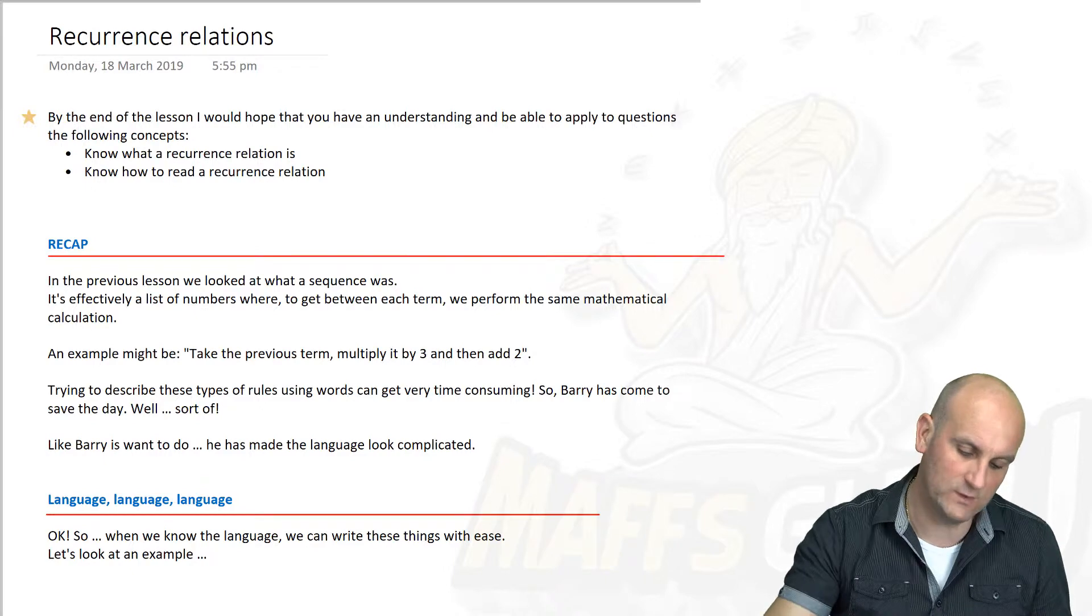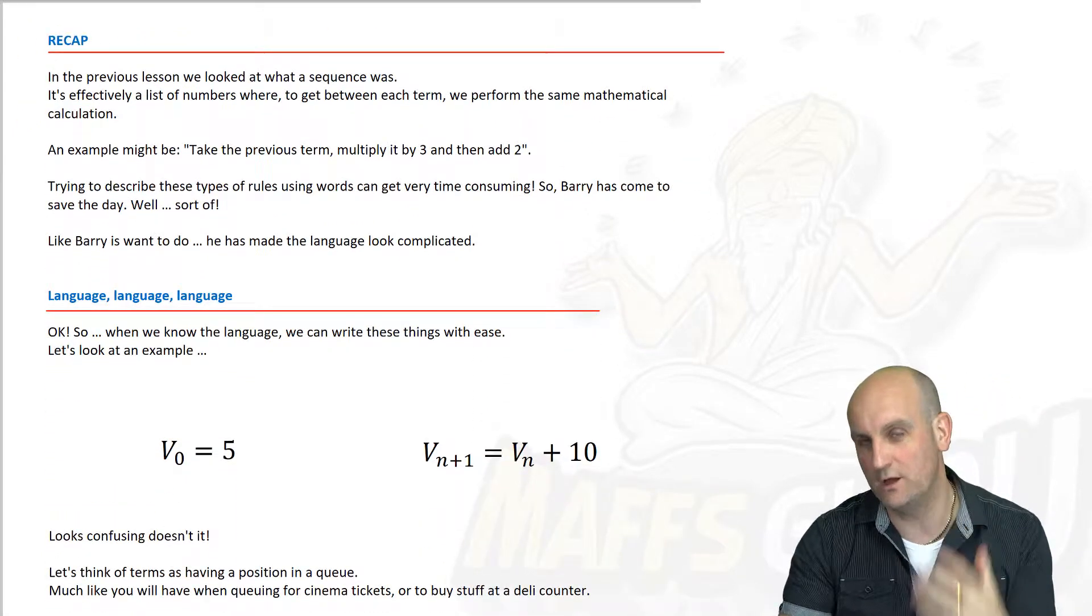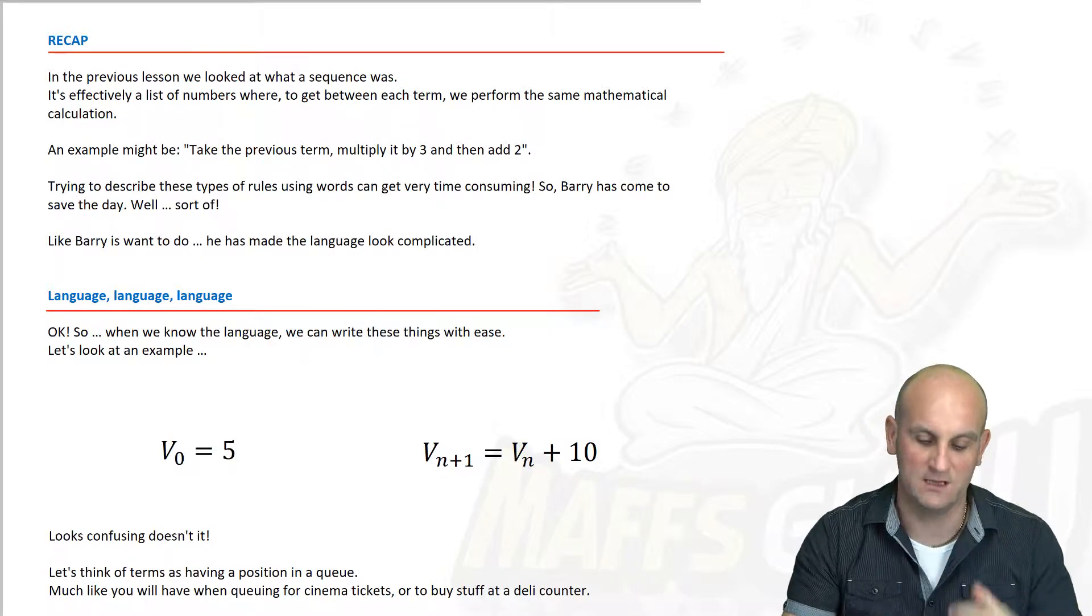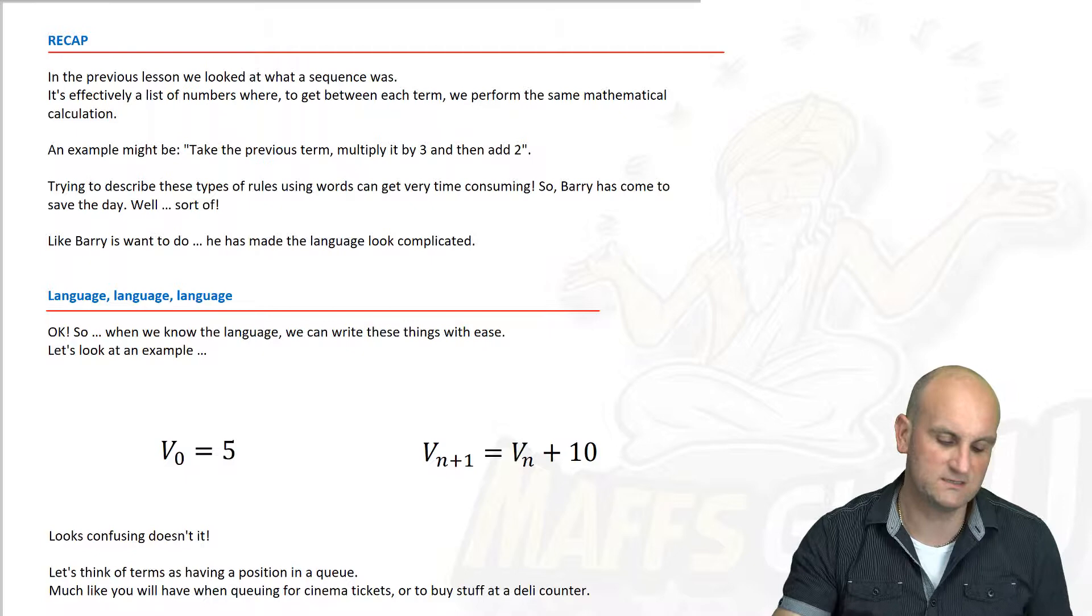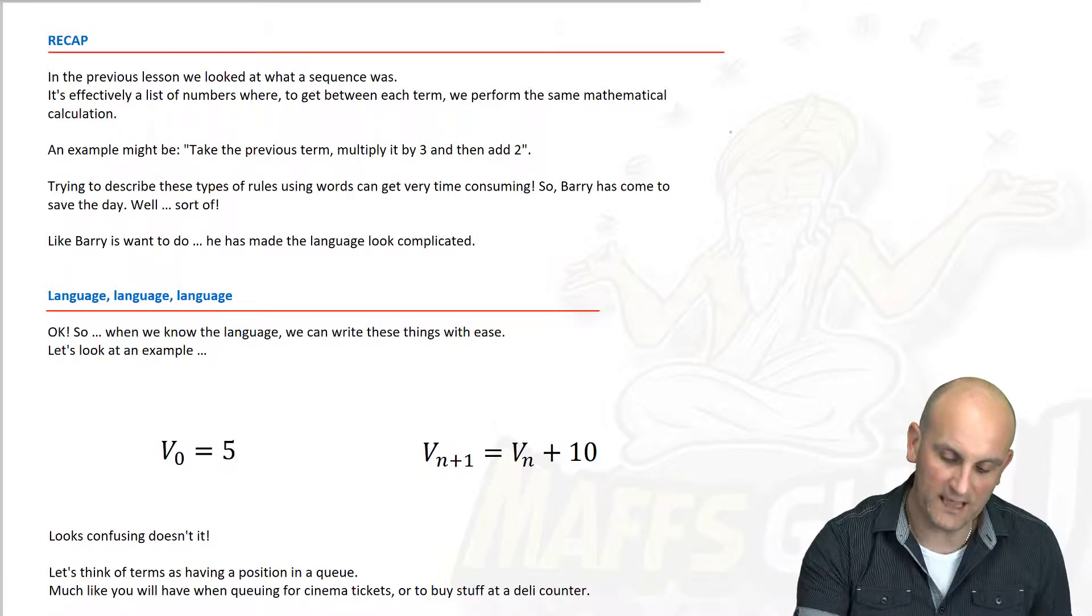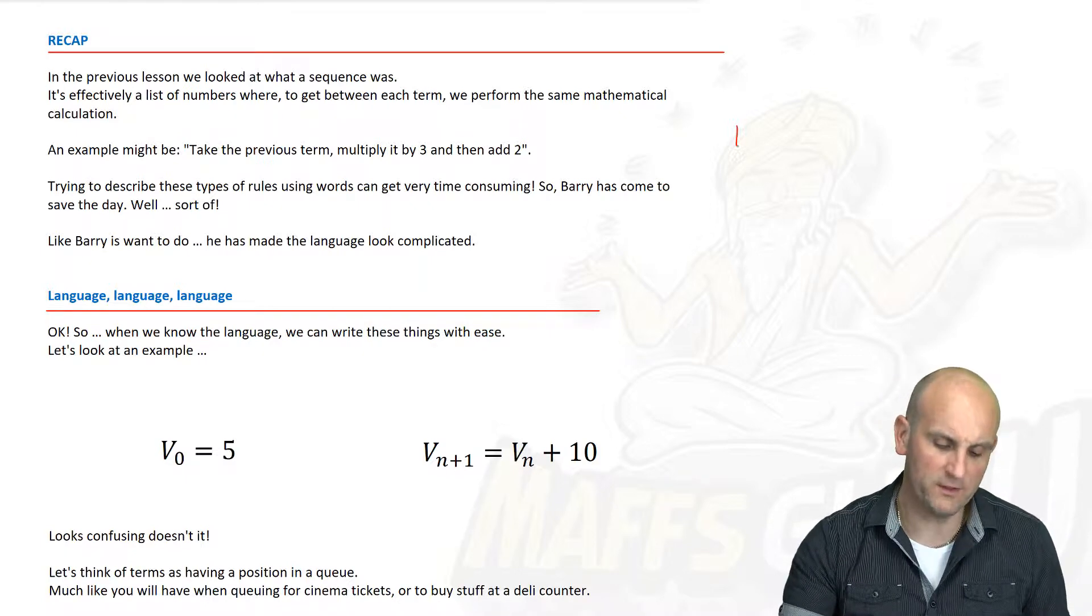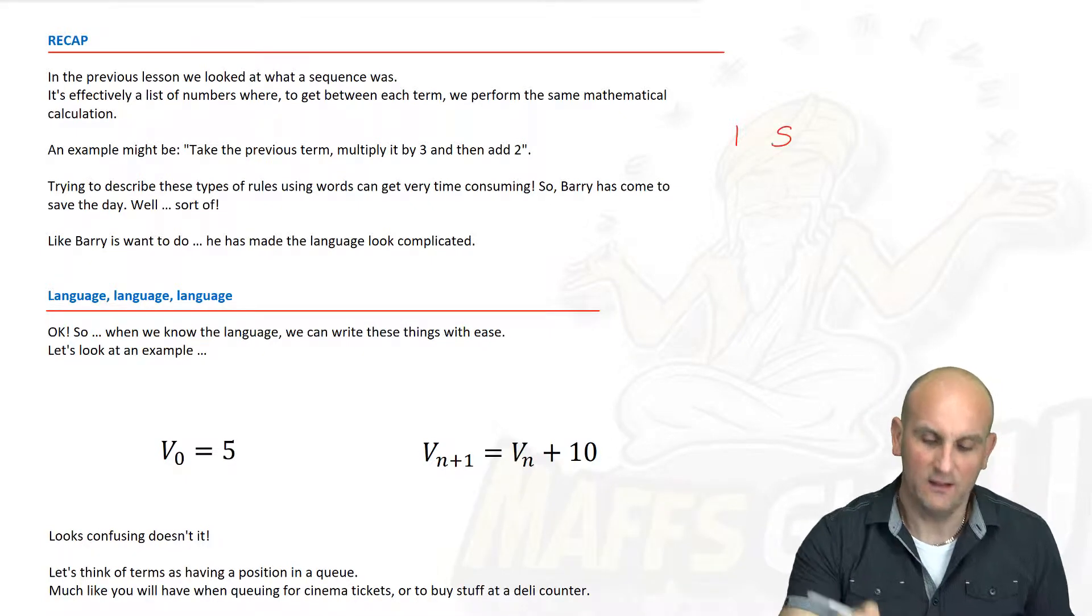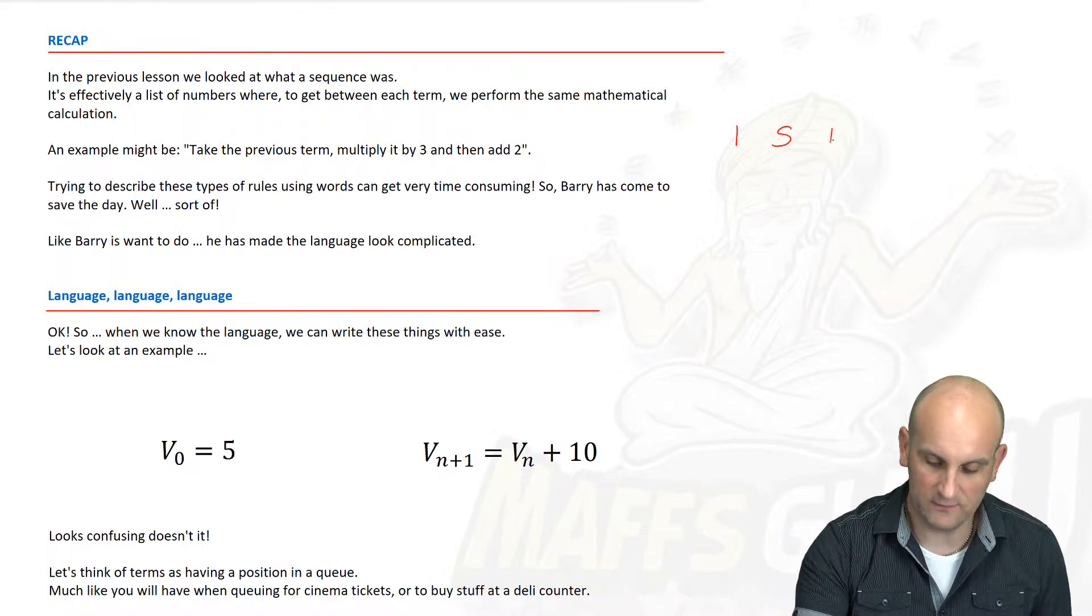Now, in the previous lesson, we did spend some time looking at what a sequence was. We just said it was term to term, a list of numbers that basically had some sort of pattern to it. So, an example was, maybe take the previous term, multiply it by 3 and then add 2. So, if I had an initial number, my start number may be 1. Multiply it by 3 and add 2 would give me 5. Then I do the same thing again. I take 5, multiply it by 3 is 15, add 2 is 17.